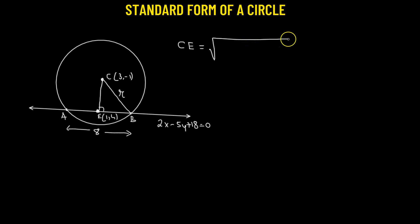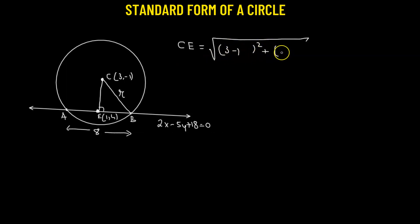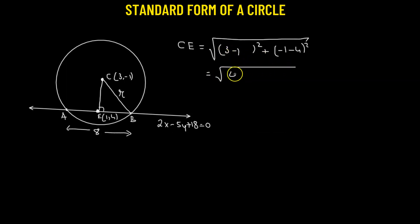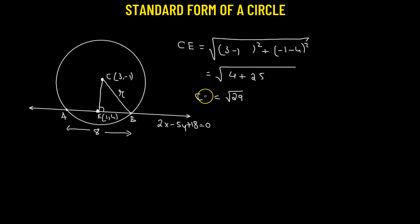Using the distance formula, CE equals the square root of (3 minus 1)² plus (-1 minus 4)². That gives the square root of 2² plus (-5)², which is the square root of 4 plus 25, equals the square root of 29.